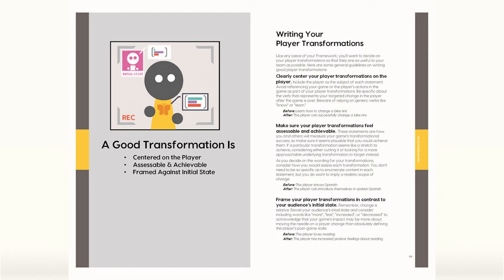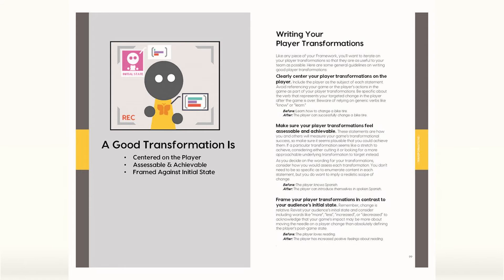Now that you've figured out how you want to transform your player, here's another question — Part 4: why haven't they transformed already? What are the barriers in their way? Obviously there can be many barriers, from motivation to fear. You will have to do research to figure it out, because while you might think you know, you probably don't. Once you've figured out what the barriers are, this chapter will teach you how to deal with them. After all, you want to avoid developing a game that does not get your audience past its barriers.